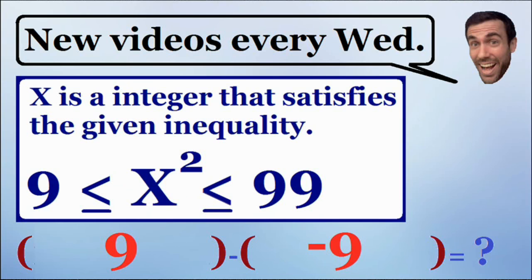So the answer to this trick question is 9 minus negative 9, which is equal to a positive 18.